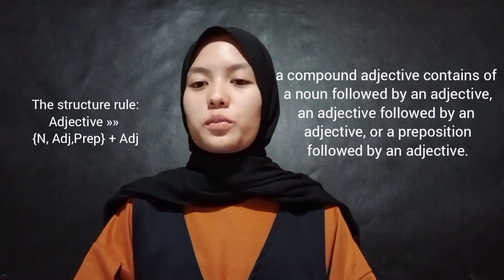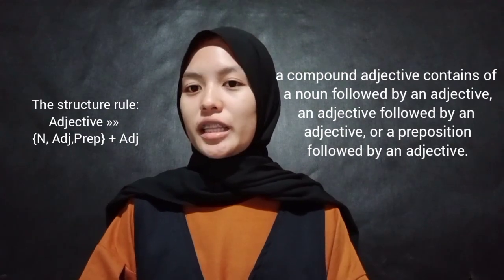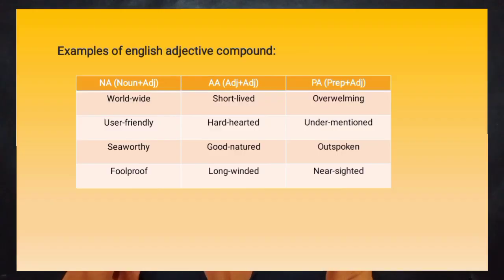Here are some examples of English Adjective Compound. The first pattern is noun followed by an adjective. The examples are: worldwide, user-friendly, sea-worthy, and foolproof.